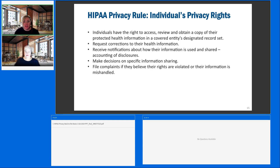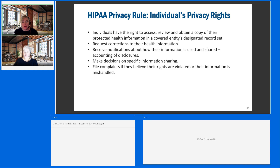Individuals have the right to access, review, and obtain a copy of their PHI. They can also request that corrections be made — if they request something be changed, it needs to be reviewed and either accepted or denied. That's also another policy you would want to have in place: your structure for reviewing any requests for corrections or amendments to the health information record. They also receive notifications about how their information is being used, which is called an accounting of disclosures. For example, if their information is being disclosed to a health plan or insurance provider for underwriting purposes, those are disclosures you would want to be able to provide to the patient or their representative if asked.